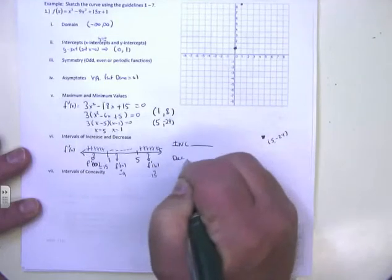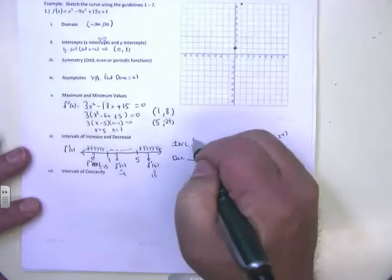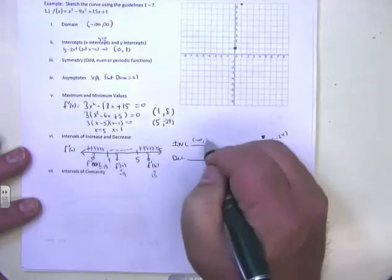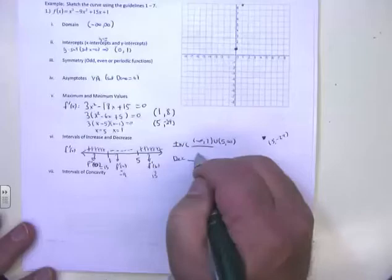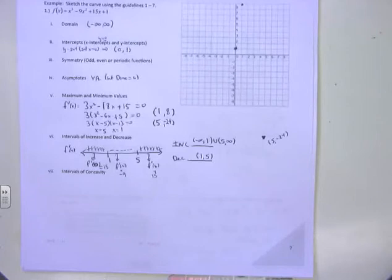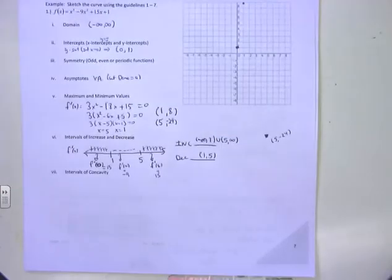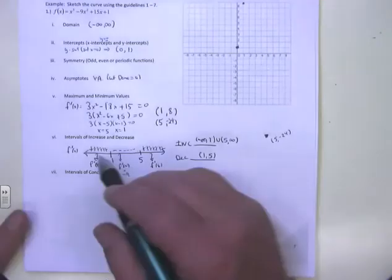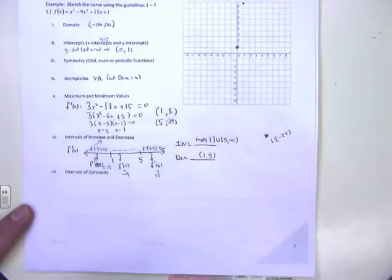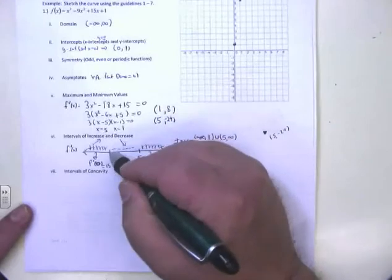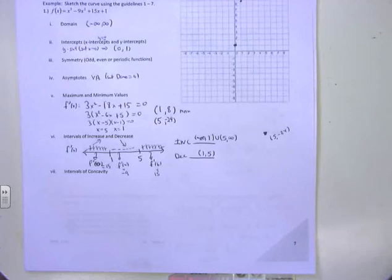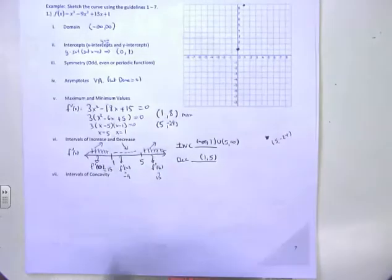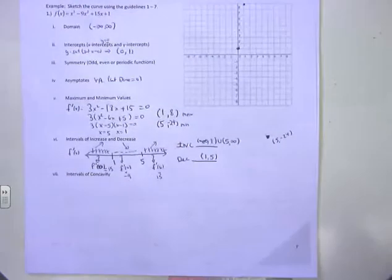The function is increasing on (-∞, 1) ∪ (5, ∞) and decreasing on (1, 5). This is the first derivative test. Between -∞ and 1 I'm increasing, then decreasing after 1 — making x = 1 a relative maximum. I go down until I hit 5 and then go back up — making x = 5 a relative (local) minimum.